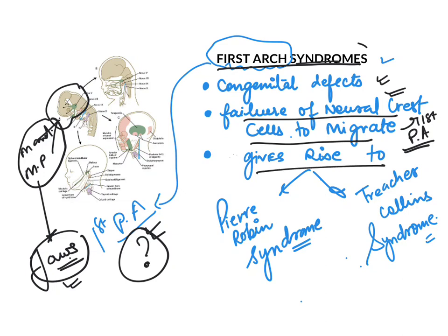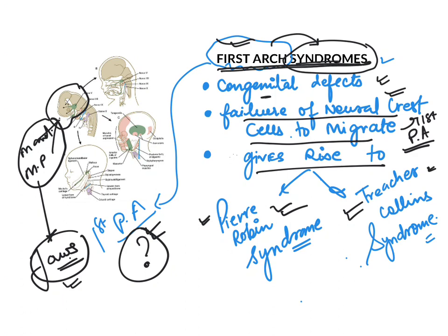The first arch syndrome gives rise not just to one syndrome but to two syndromes: the Pierre Robin syndrome and the Treacher Collins syndrome. In the next video, I'll explain each of these in detail. For now, just remember that first arch syndromes are congenital defects caused by the failure of neural crest cells to migrate into the first pharyngeal arch, giving rise to these two conditions.